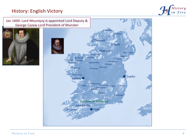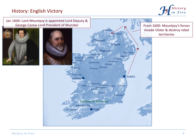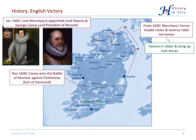The English victory had to come. Two more capable Englishmen were sent over: Lord Mountjoy as Lord Deputy, and George Carew as Lord President of Munster. The first thing Mountjoy did was invade Ulster and destroy vast territories of the rebels, which led to famine and tied up Irish forces. Carew won a battle in the south and took Fitzthomas and Florence McCarthy — a very important chieftain in the south — prisoner.